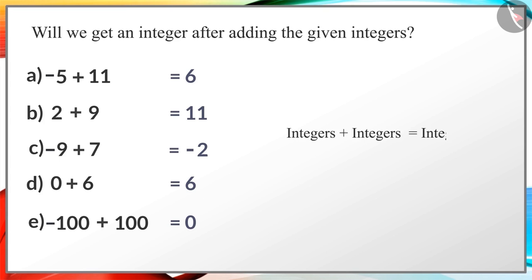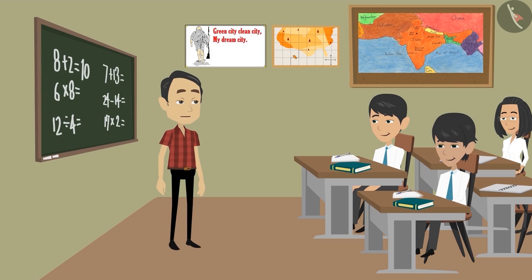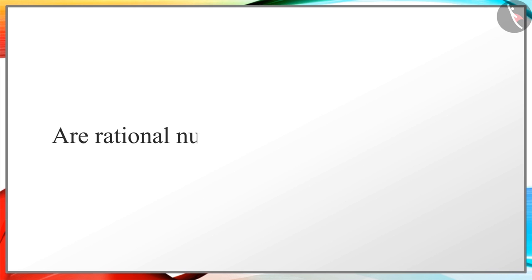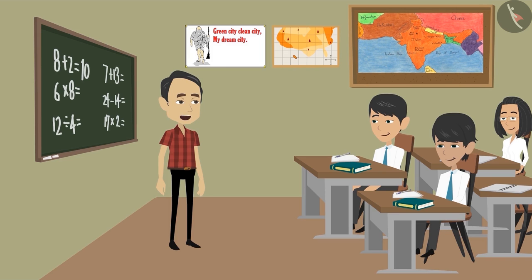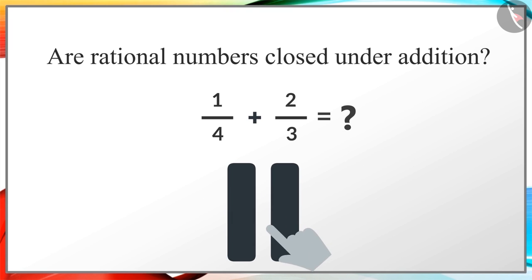Are rational numbers closed under addition? Let's examine it. We take two rational numbers. What will we get by adding 1 by 4 and 2 by 3? You can try to solve this question.